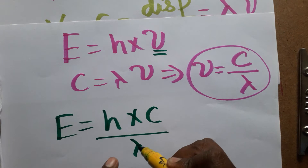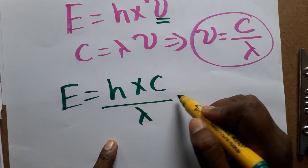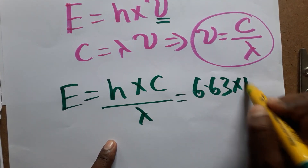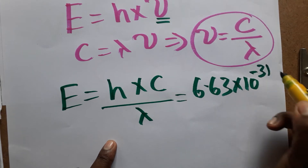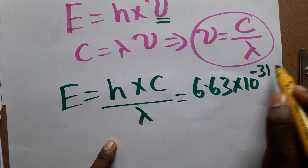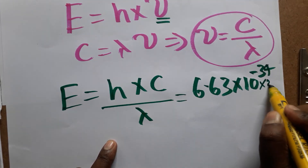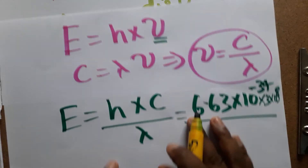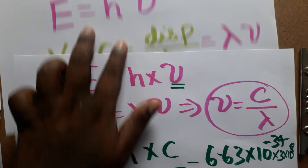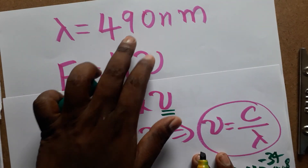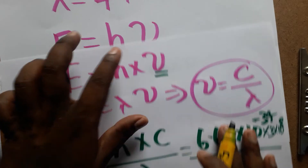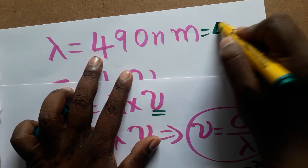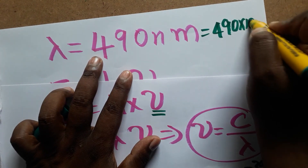Planck's constant h is 6.63 × 10⁻³⁴. The velocity of light c is 3 × 10⁸ meters per second. The wavelength given in the data is 490 nanometers.